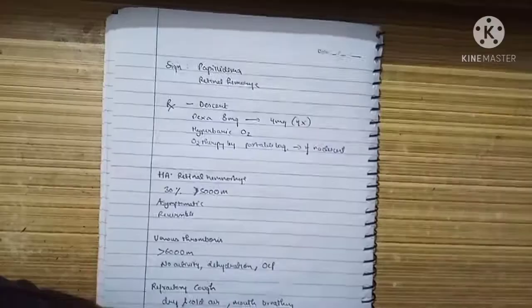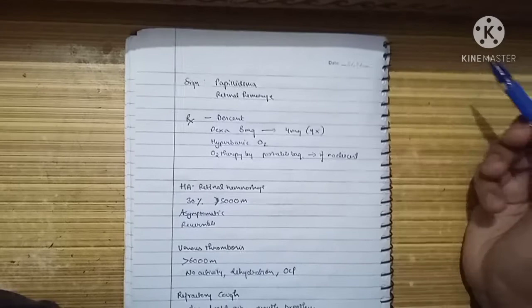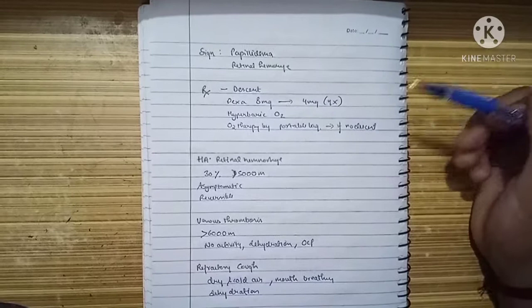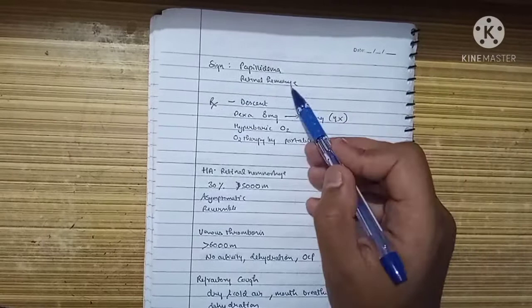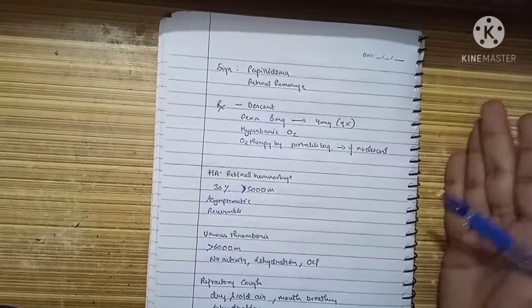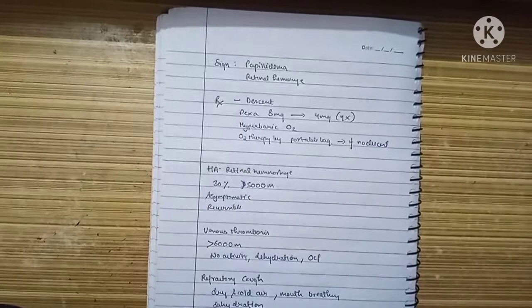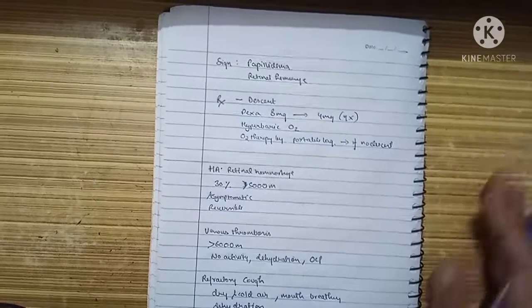The classical signs of HACE due to raised intracranial pressure from cerebral edema: on fundoscopy we'll see papilledema and retinal hemorrhages. Treatment includes descent, dexamethasone 8 mg followed by 4 mg four times a day, hyperbaric oxygen, and if unable to descend quickly, O2 therapy by portable bag.